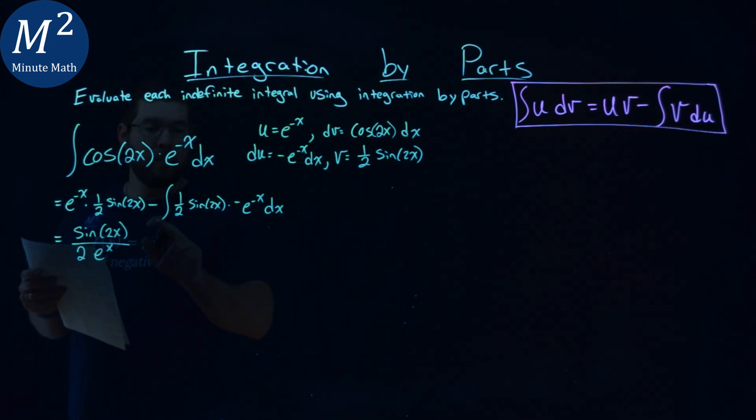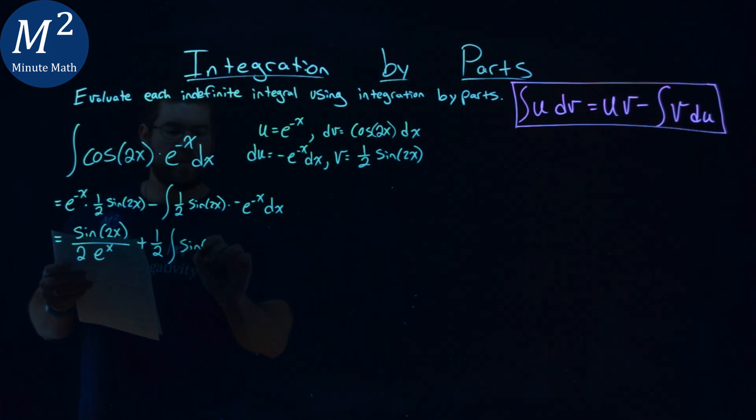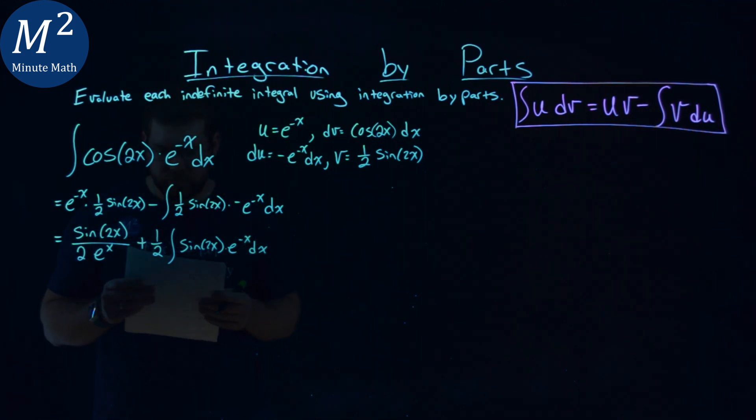Now we have minus, but we have one-half and this negative. So it becomes a positive one-half out front, times the integral of sine of 2x times e to the negative x power dx.